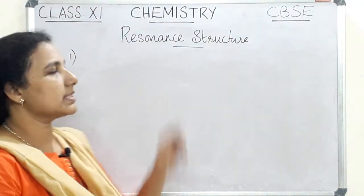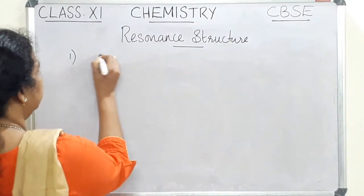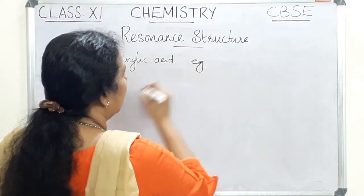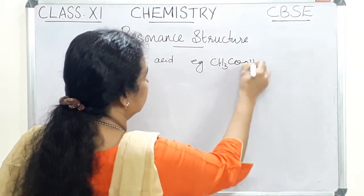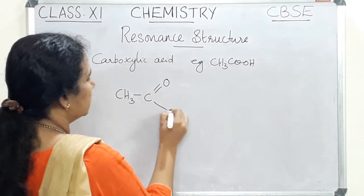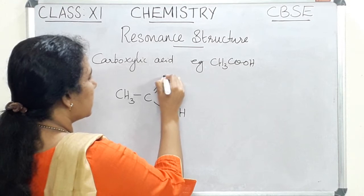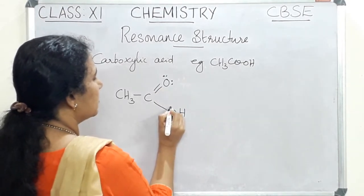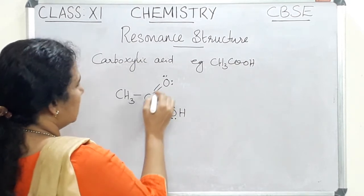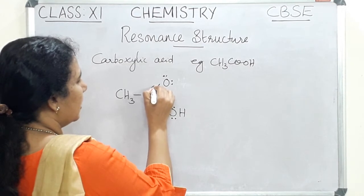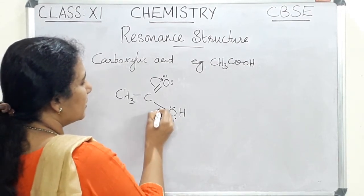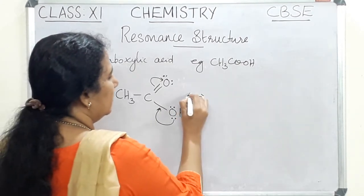Let us draw some resonance structures of some organic molecules. The first one is carboxylic acid. Taking the example of CH3COOH, we can represent it where the oxygen atom has two lone pairs of electrons. In this case, the pi electrons are shifted towards the electronegative oxygen and the lone pairs are shifted towards the other side, giving us the next structure.